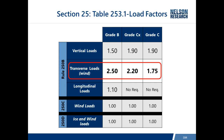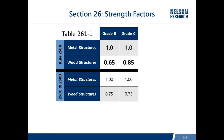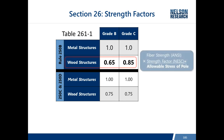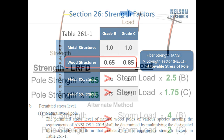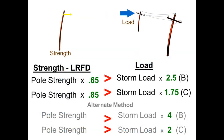In the strength factor table, Table 261-1, wood structures have strength factors of 0.65 for Grade B and 0.85 for Grade C. This means for Grade B, you can only load the pole to 65 percent of its ultimate capacity, leaving additional safety margin. The reference confirms that these percentages are a percent of the fiber strength values presented in ANSI O5.